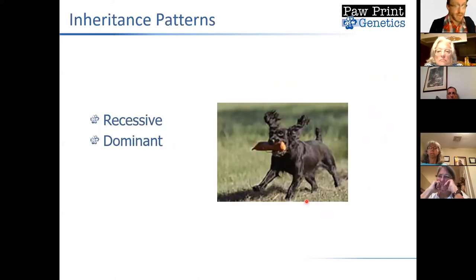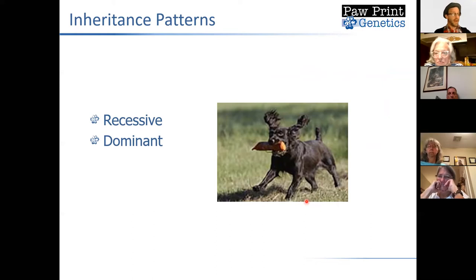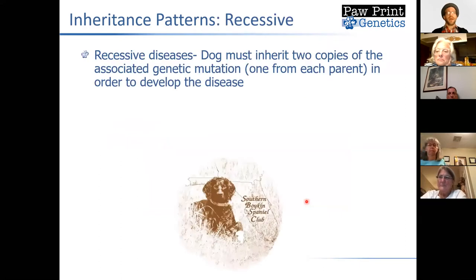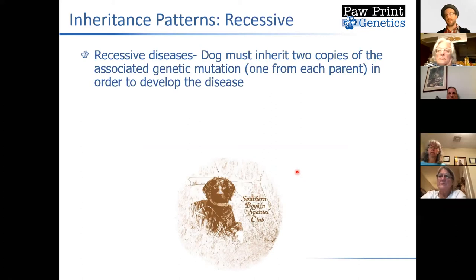We're going to talk about a very particular and important inheritance pattern seen in many diseases we test for: recessive inheritance. Recessive diseases are those where a dog must inherit two copies of the associated genetic mutation — one from each parent — in order to develop the disease.